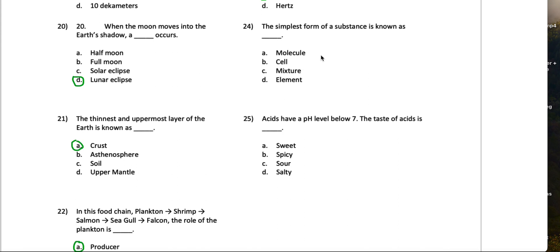The simplest form of a substance is known as... so molecules are typically not the simplest form, they are combinations of two or more elements, so that's not it. Cell, it would be cell if we were talking about the simplest form of life, but this is a substance so it's not life. Mixture is also not it because mixtures may be like water and sodium or whatever, so mixture can't be it. So I'd say element would be 24.